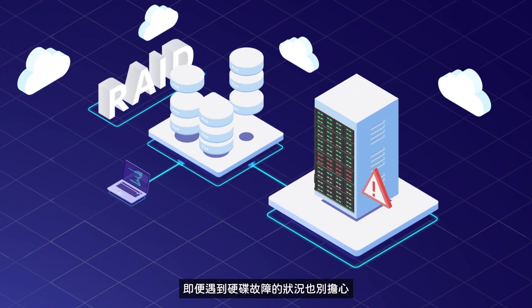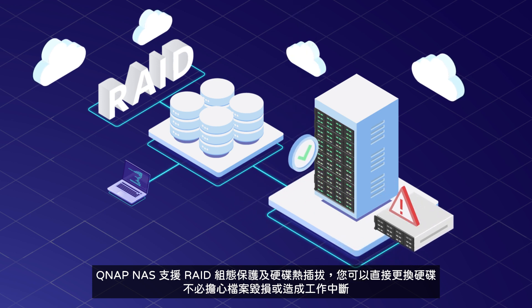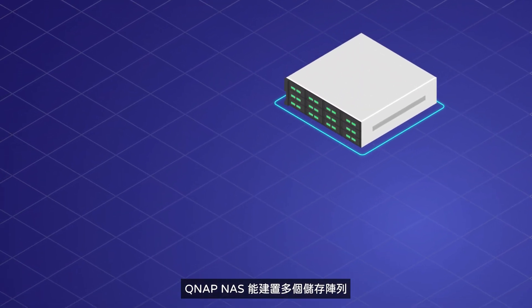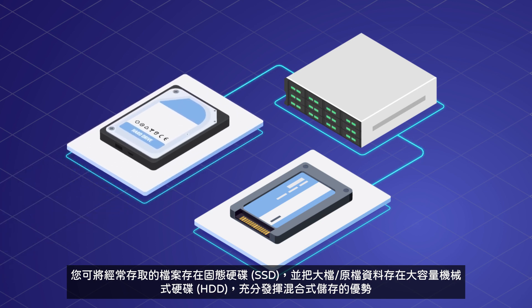And if a drive fails, QNAP is hot-swappable with RAID redundancy, so you can simply switch out affected drives without losing your data and interrupting your workflow. And with the ability to create multiple storage arrays, you can set up a hybrid hard drive and solid-state solution and store the proxy files that you work with on the SSDs for superior performance, while keeping the larger, original files on higher-capacity hard drive arrays.